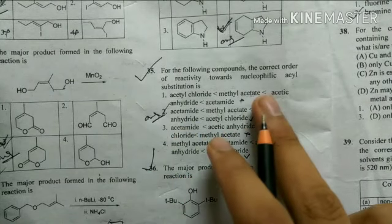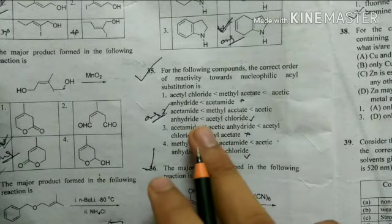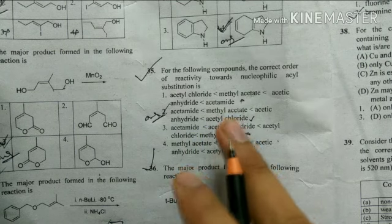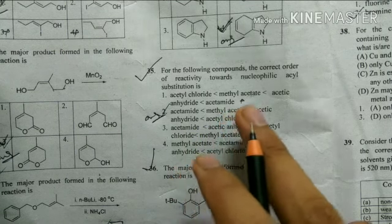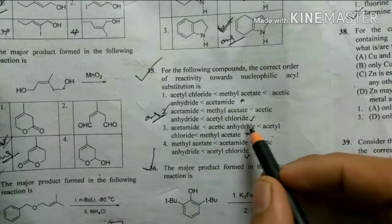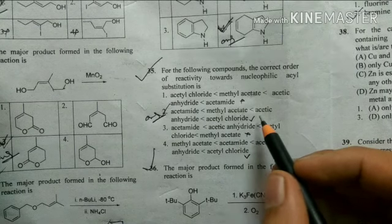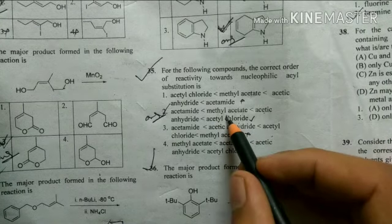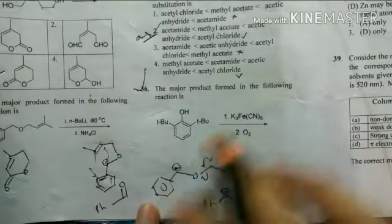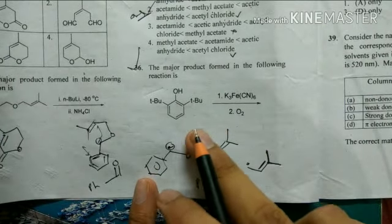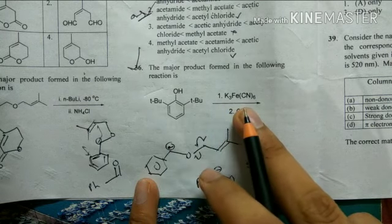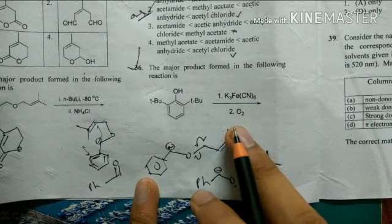This question is about the order of nucleophilic substitution reactions. The more electrophilic the carbonyl group, the faster the reaction rate. The fastest reaction is with acid chloride, then acid anhydride, then methyl acetate, and then acetamide. So option 2 is the correct answer.